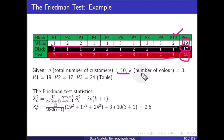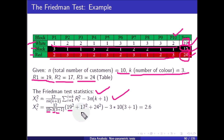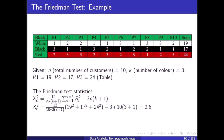So n = 10 (total customers), k = 3 (total colors), R1 = 19, R2 = 17, and R3 = 24. The Friedman test statistic formula is: 12 / (n·k·(k+1)) × (R1² + R2² + R3²) − 3·n·(k+1). With n = 10 and k = 3, substituting all values gives a calculated value of 2.6.